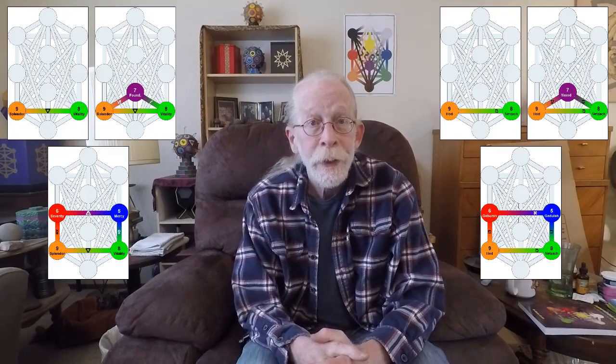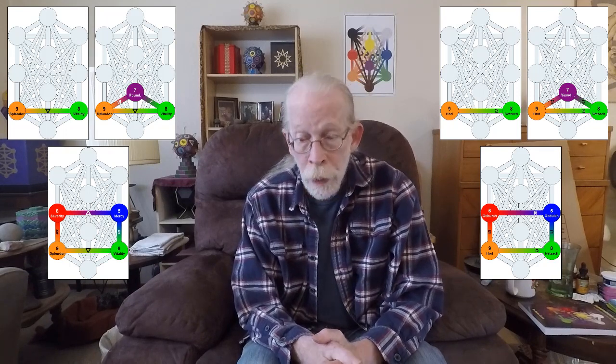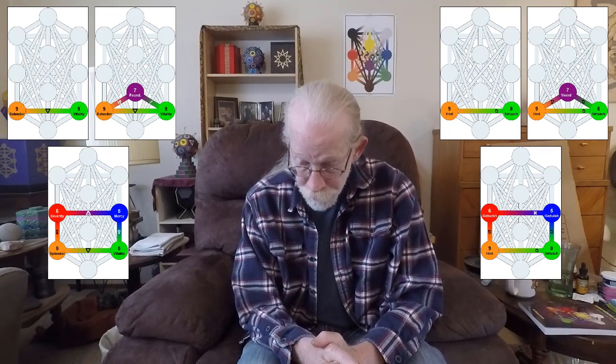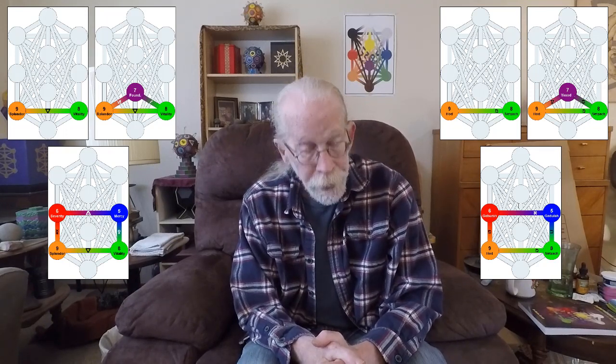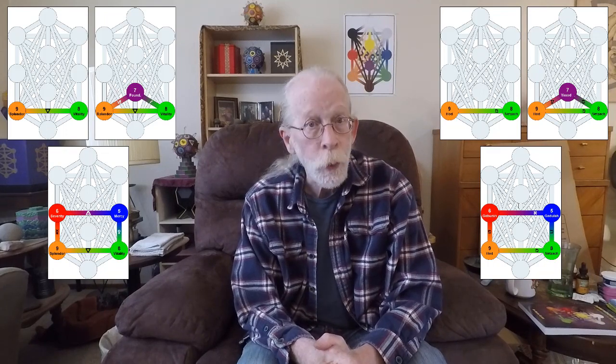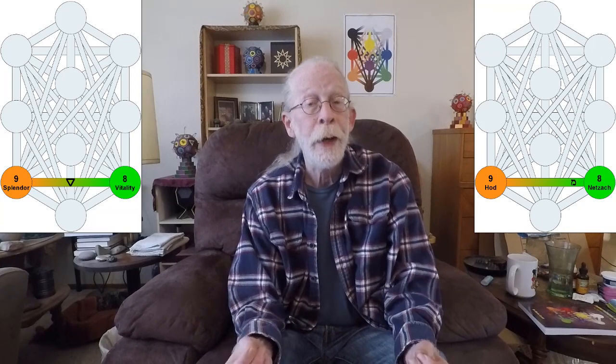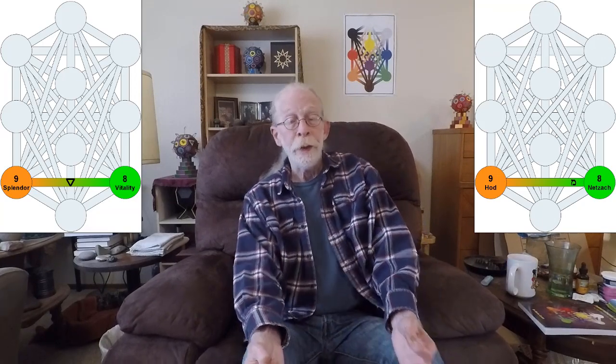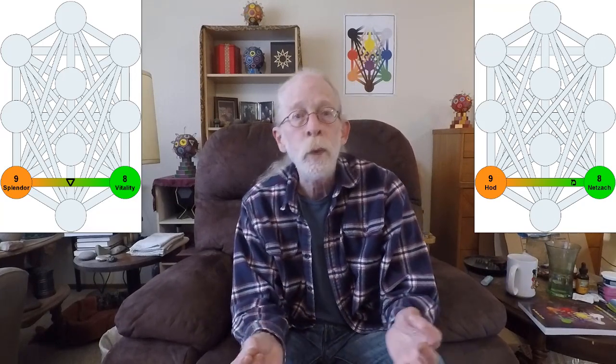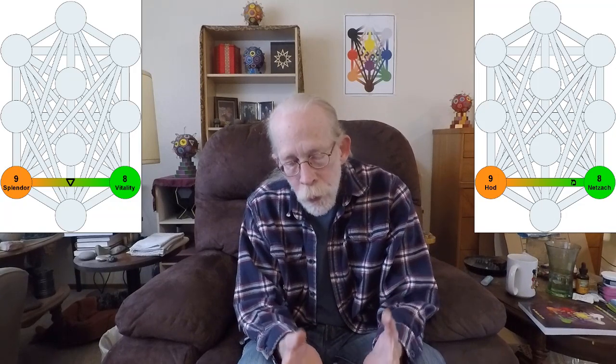Today we talk about the first three gates of MEM. First is a linear gate, then a triangular gate, then a quadrangular gate. The linear gate is the path of MEM. Now this is the mother letter of water, the lowest of the mother letters on the tree of life.